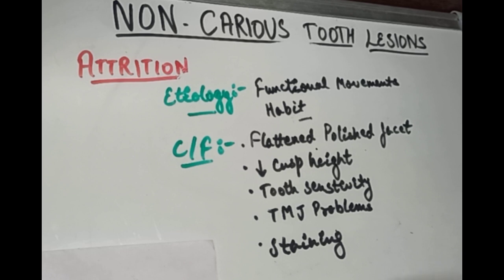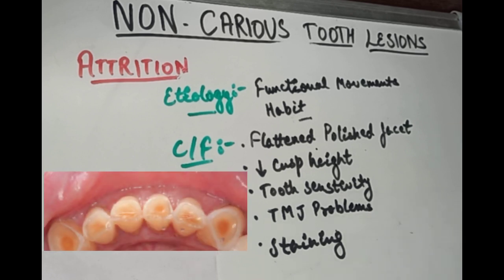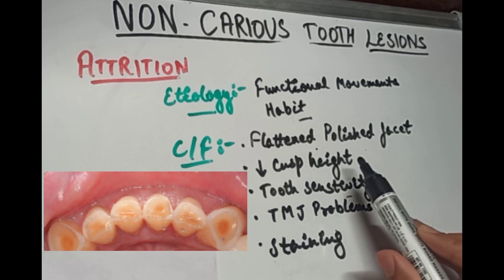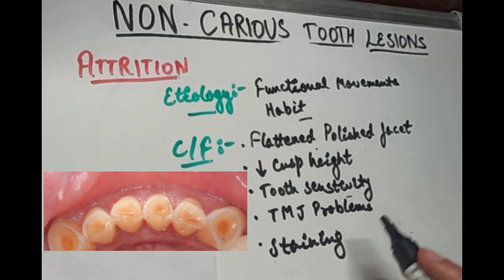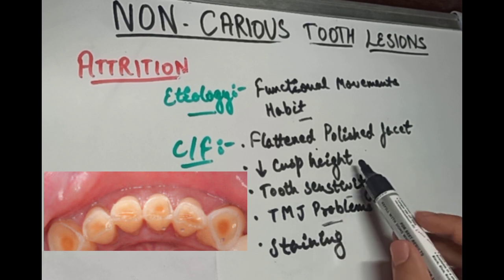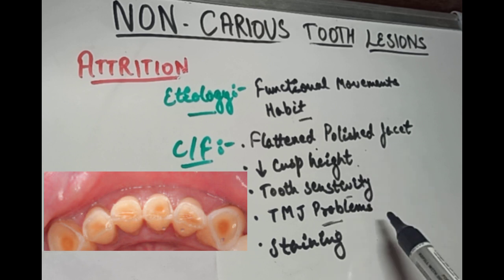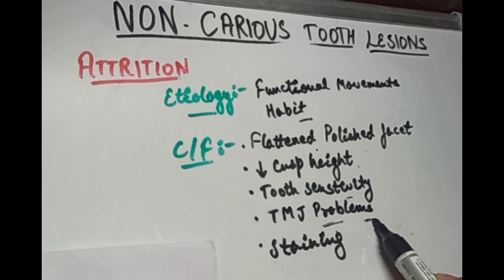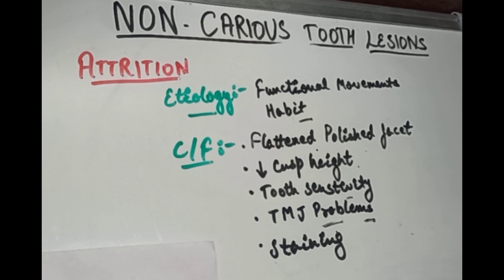Clinically, attrition appears as a small polished facet on a cusp tip or a slightly flattened incisal edge, with gradual reduction of cusp height and flattening of occlusal surfaces with age. This leads to tooth sensitivity due to loss of tooth structure, and TMJ problems may develop because the reduction in cusp height leads to reduced vertical dimensions and overclosure. There may also be complete loss of cuspal interdigitation, and when enamel is worn away it results in extrinsic yellow or brown staining of the exposed dentine.